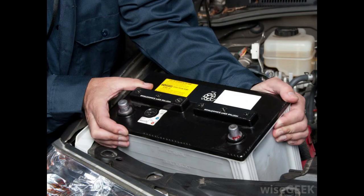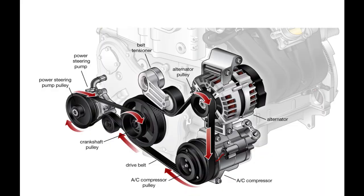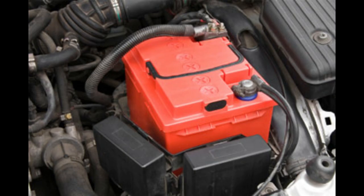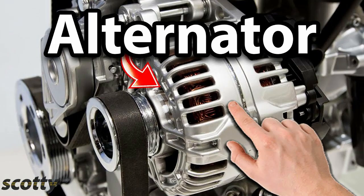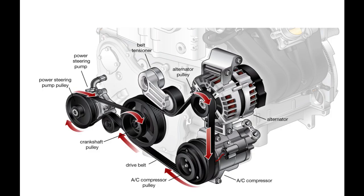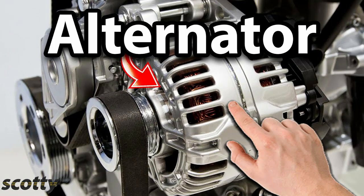Then we start with the engine. The engine starts to rotate. We have built a belt — this belt is connected to the shaft of the engine. This belt is rotating the alternator and the hydraulic power steering.